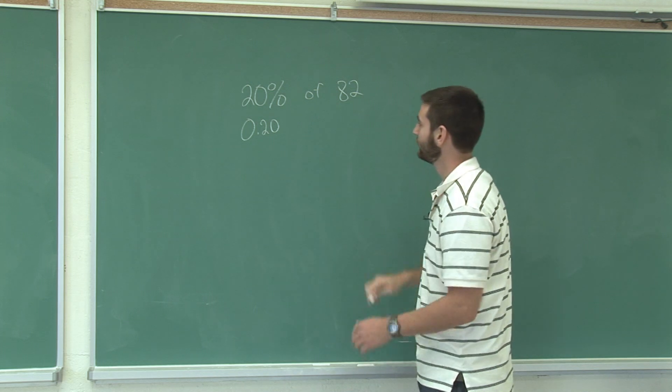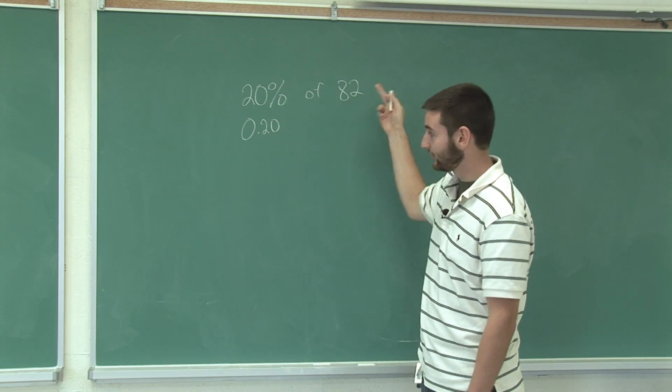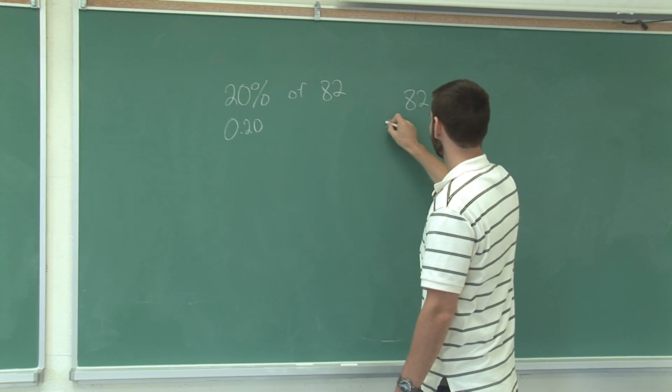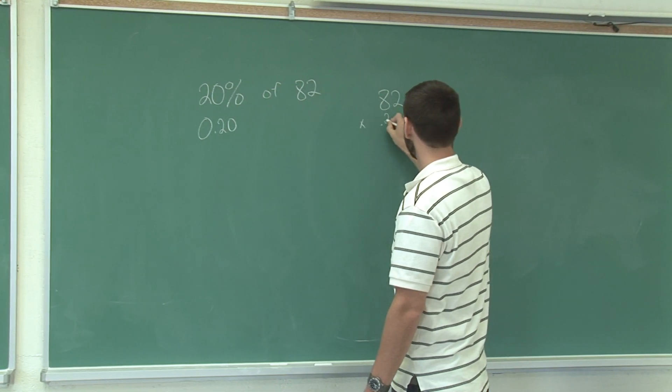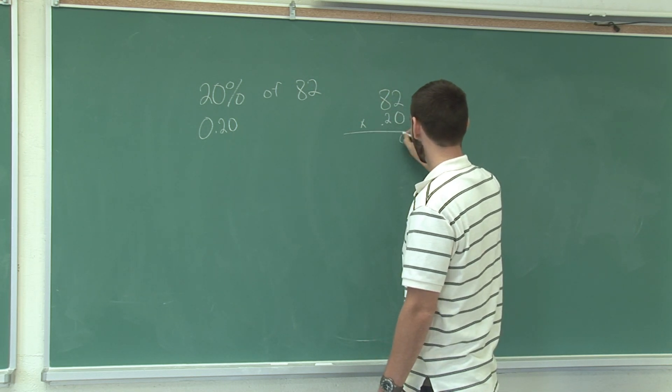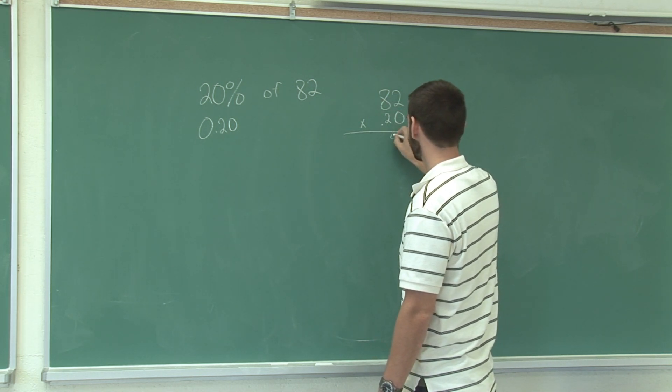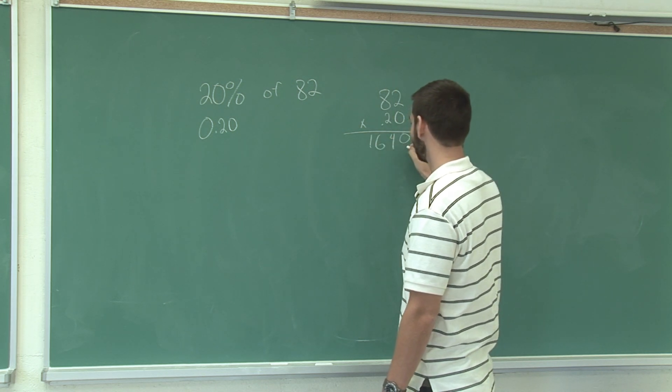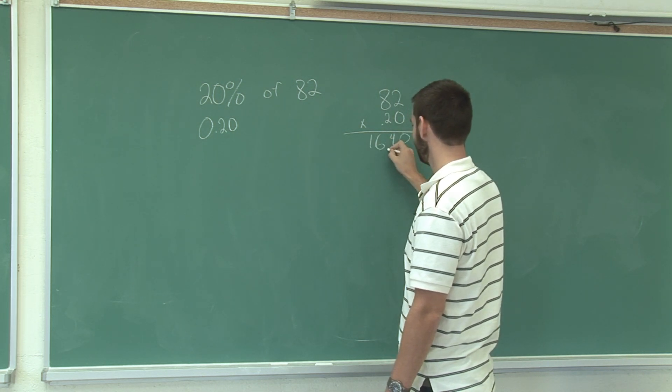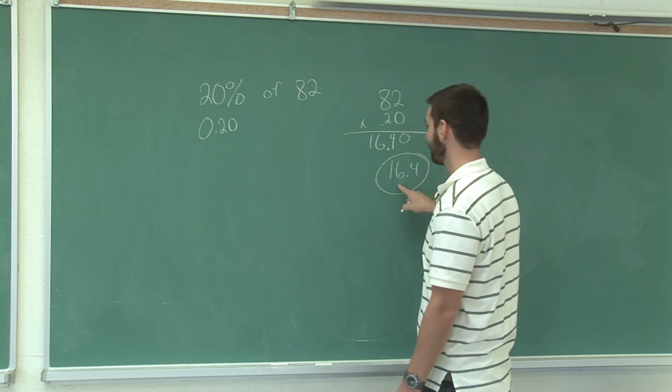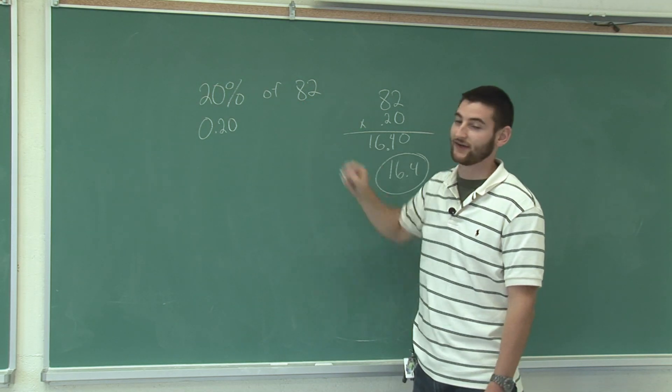Now, what we could do to find 20 percent of 82 is multiply 82 by 0.20. 0, 2 times 2 is 4, 8 times 2 is 16. Two decimal places, 1, 2, 16.4. 16.4 is 20 percent of 82.